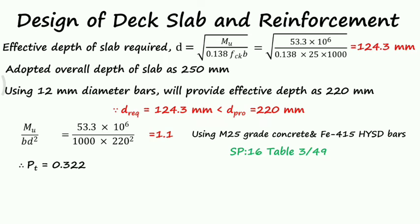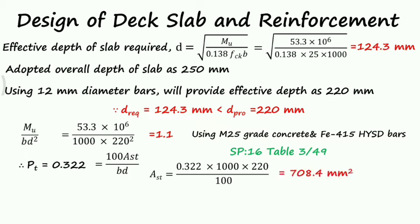Percentage of steel obtained is 0.322, so 100 times AST divided by BD. AST equals 0.322 times B value 1000 times D value 220 divided by 100, so AST is 708.4 mm squared.